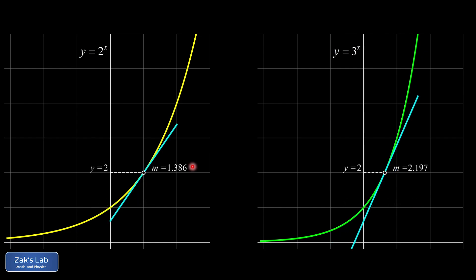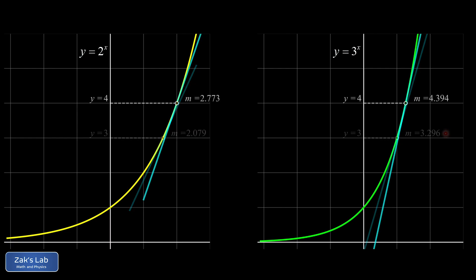Moving up to y equals 2, we see the slope on 2 to the x is a little less than 2, and the slope on 3 to the x is a little bigger than 2. And this same idea continues with y equals 3. The slope on 2 to the x is less than 3, while the slope on 3 to the x is a little bigger than 3. And there's y equals 4 just for the sake of completeness.